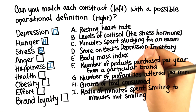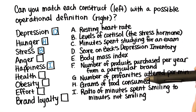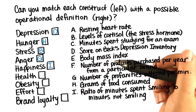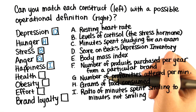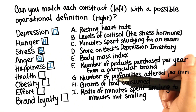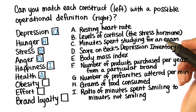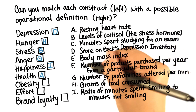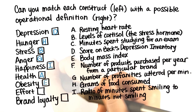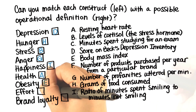So for anger, a better operational definition would be the number of profanities uttered per minute. Some operational definitions aren't so good, but this is just an example. Health could be resting heart rate. Obesity, body mass index. Effort, minutes spent studying for an exam.